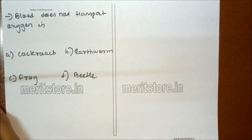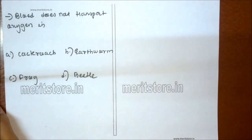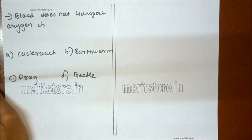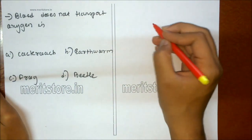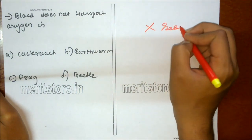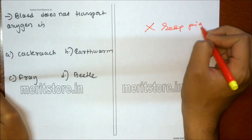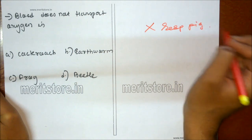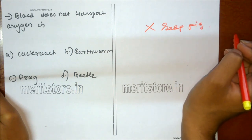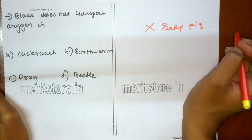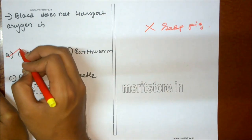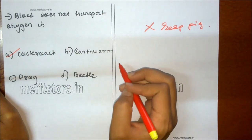Blood does not transport oxygen in: A cockroach, B earthworm, C frog, D beetle. Blood of cockroach does not have a respiratory pigment, so blood does not function as an oxygen carrier in cockroach. So option A is the correct answer.